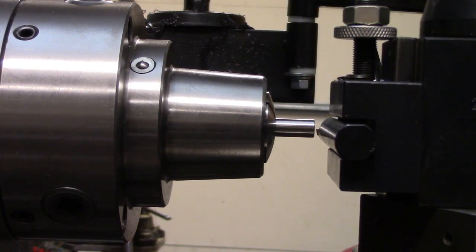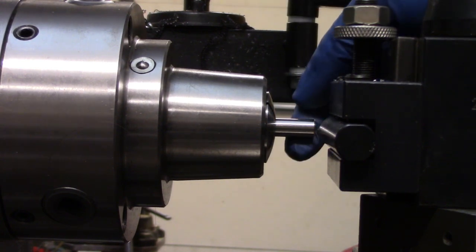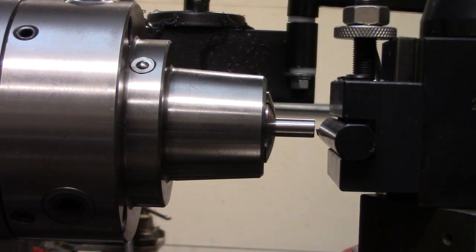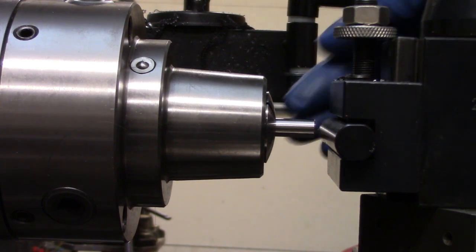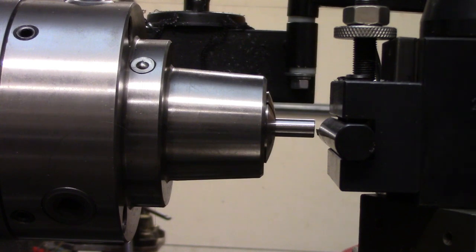Then I'm going to harden that. This is O1 tool steel which is very easy to harden in the home shop. I'll heat it up to non-magnetic and then quench it in oil.